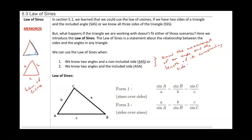When can you use the law of sines? When you know the measurement of an angle and the length of its corresponding side. For example, if side a is 5 and angle A is 40 degrees, I can use the law of sines. Form 1: sine of angle A over a equals sine of angle B over b equals sine of angle C over c.